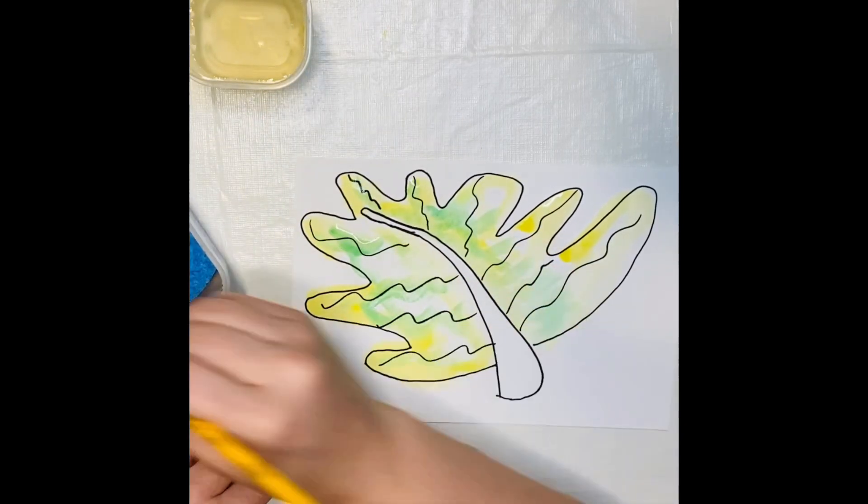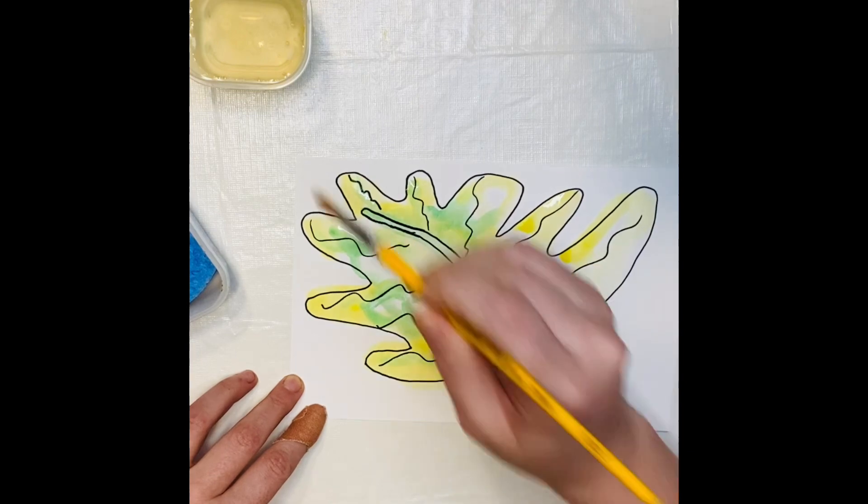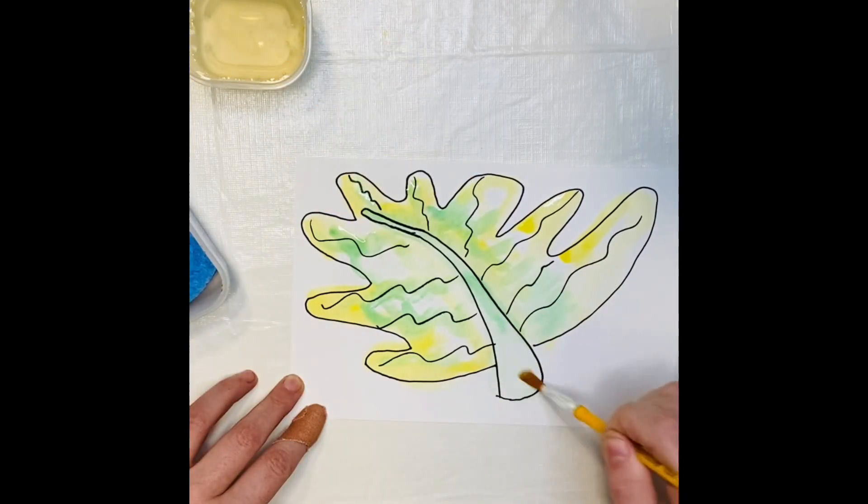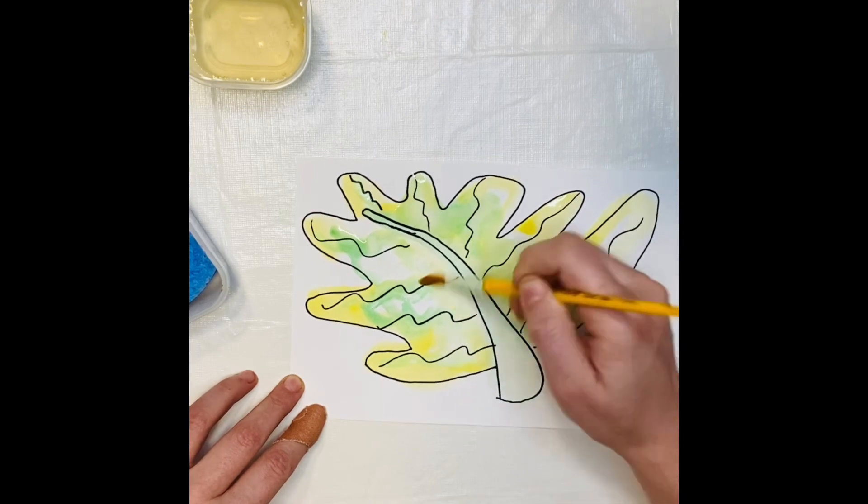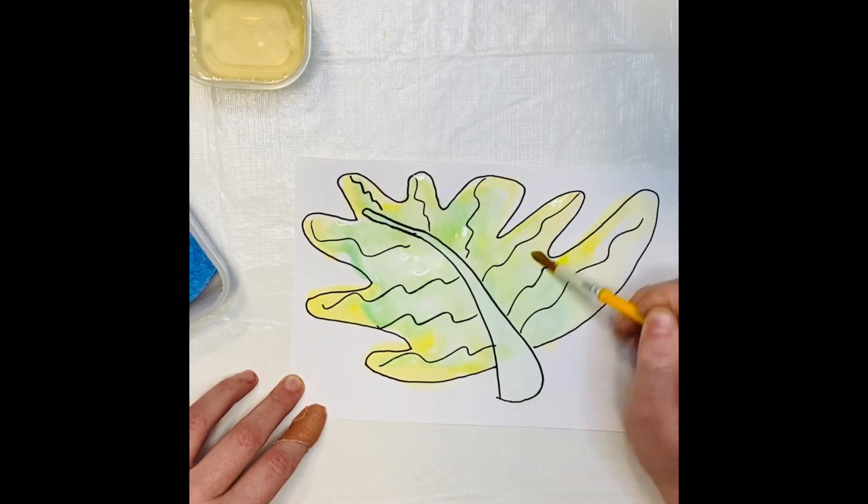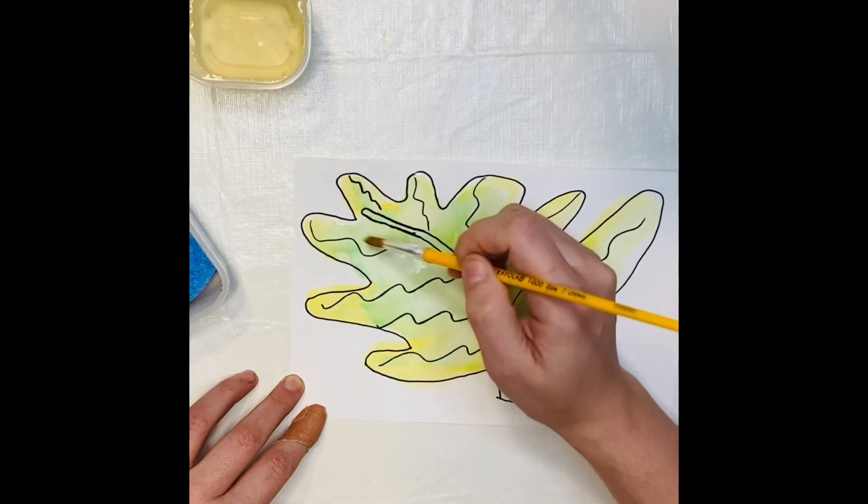The more water I add, the better these watercolor paints are going to blend together. This creates the effect that the colors are slowly mixing into one another, just like a real leaf when it changes in the seasons.